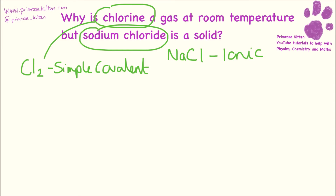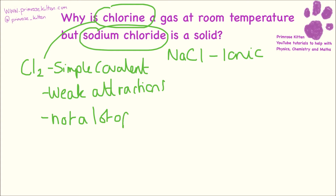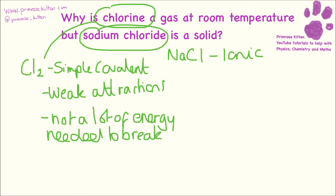Now we've interpreted the question, we can think about the difference between a simple covalent compound and a giant ionic compound. Starting with simple covalent: between each molecule we are going to have weak attractions, which means there is not a lot of energy needed to break those attractions, so it is going to have a low boiling point.